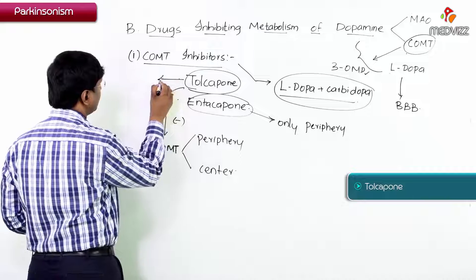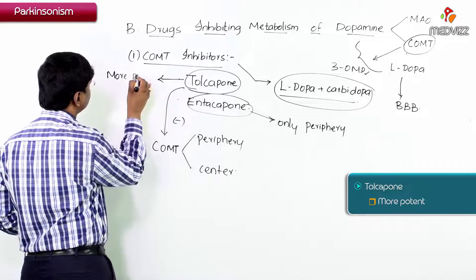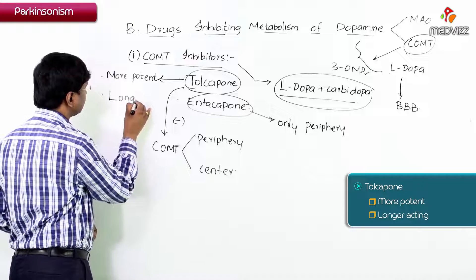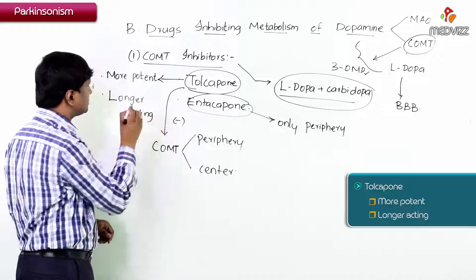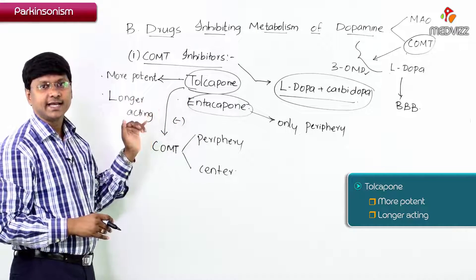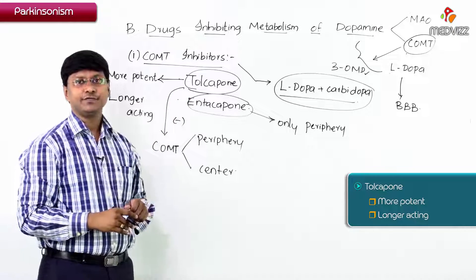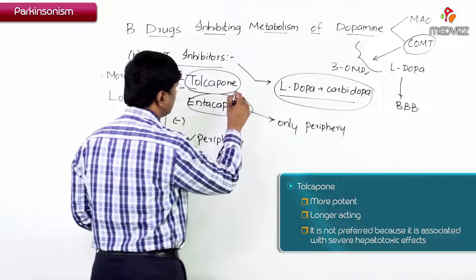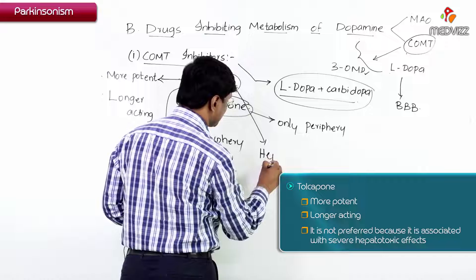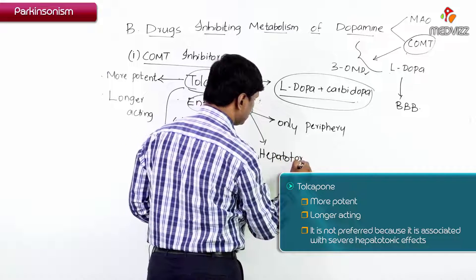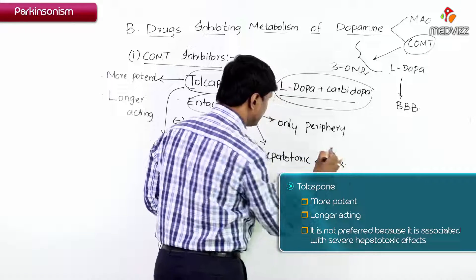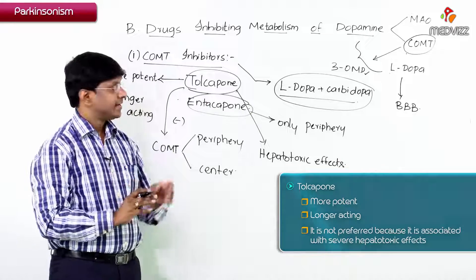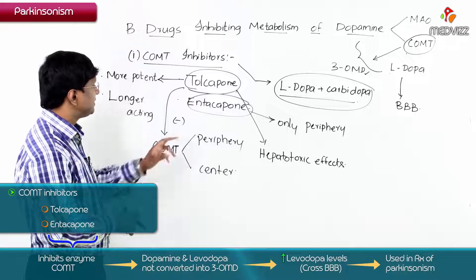Between the two drugs, tolcapone is more potent and also longer acting than entacapone. However, even though tolcapone is more potent and longer acting, it is not preferred because it is associated with severe hepatotoxic effects. That is the reason why tolcapone is not preferred.